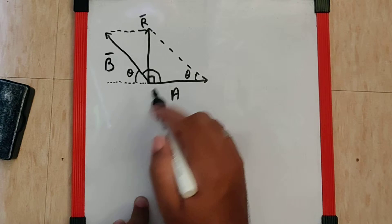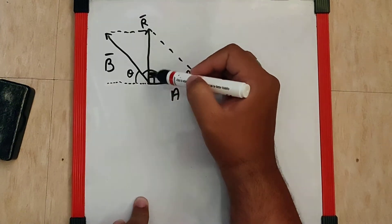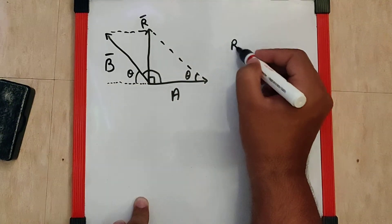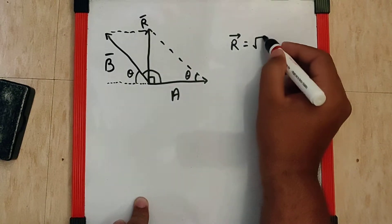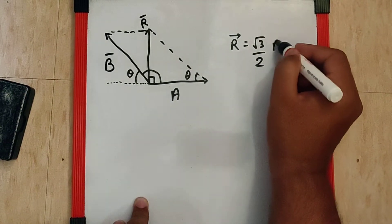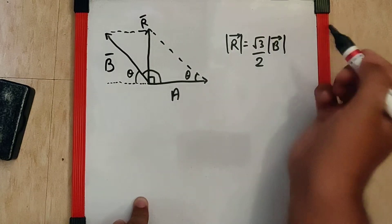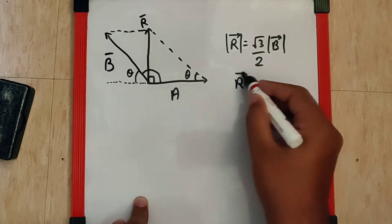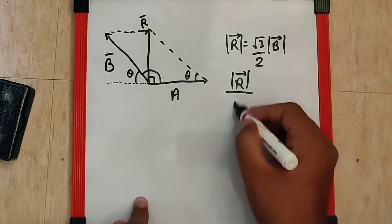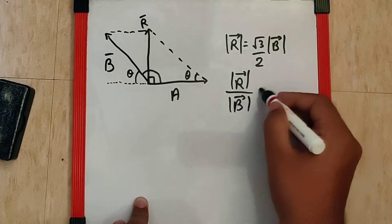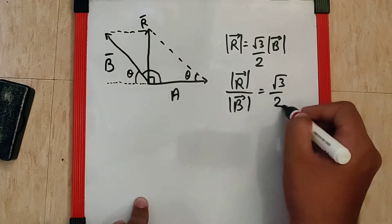In the question they have given that R is √3/2 times B. This means the magnitude of R upon the magnitude of B is √3/2.